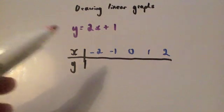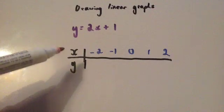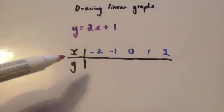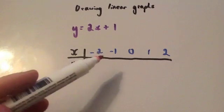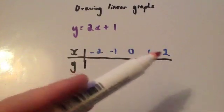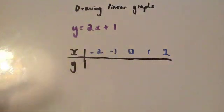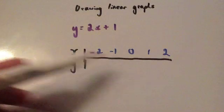A common way to draw a graph like y equals 2x plus 1 is to draw what we call an xy table. In this table you can choose some values for x. I quite often choose minus 2, minus 1, 0, 1 and 2. Strictly speaking you only need 2 points, but I would always do 3 to make sure they're in a straight line with each other.